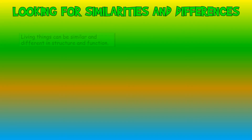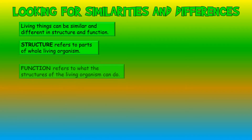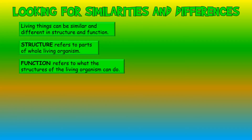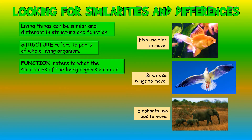When we look at living organisms, we try to find differences and similarities. Living organisms may be similar and different according to structure and function. For example, animals are similar because they all move. However, animals use different structures to move — fish use fins, birds use wings, and elephants use legs.